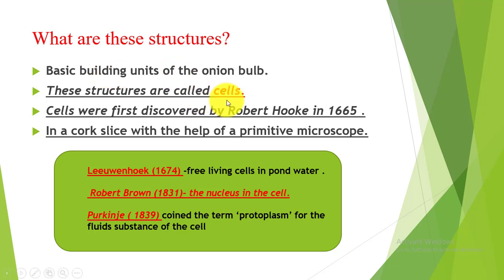These compartments are known as cells. They are the basic building units of the onion bulb. And these cells are not only found in onion peel — they make up all living organisms. They are the same basic compartments, the little rooms, that Robert Hooke first described.